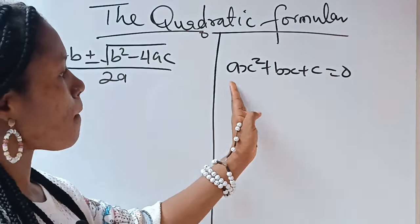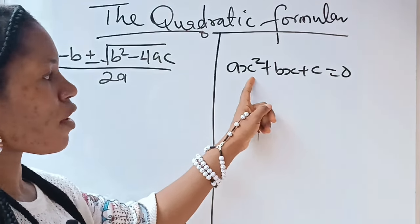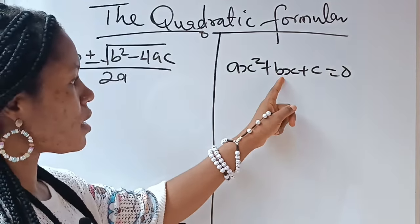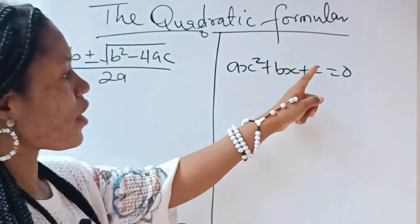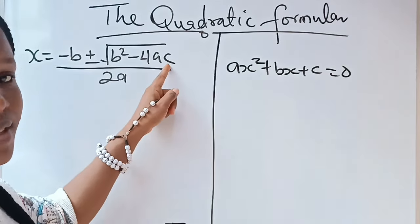Now, we are going to compare this. You are going to notice that your A is coefficient of your x², that is this A you are seeing here. Your B is coefficient of your x and your C is your constant, this C you are seeing here.